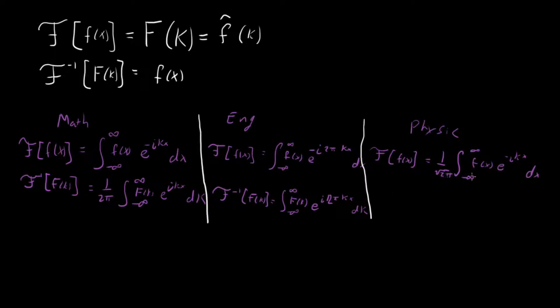So we have our forward looks like this and our backwards looks like this, almost exactly the same. This is also sometimes called the symmetric convention just because you're making things be symmetric by splitting up that one over two pi between the two.